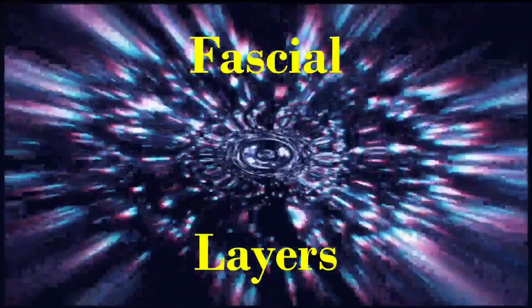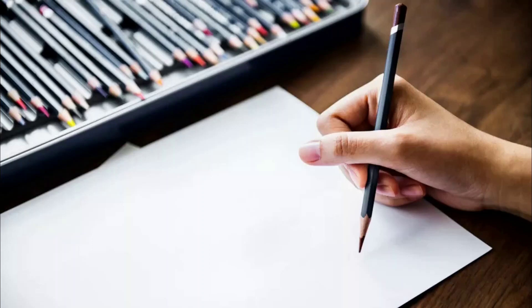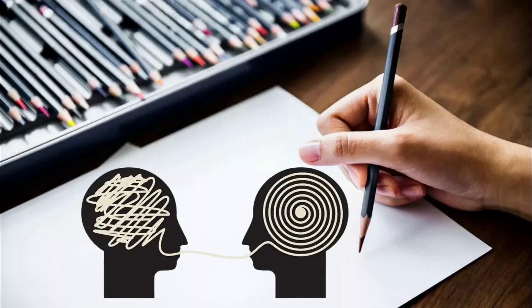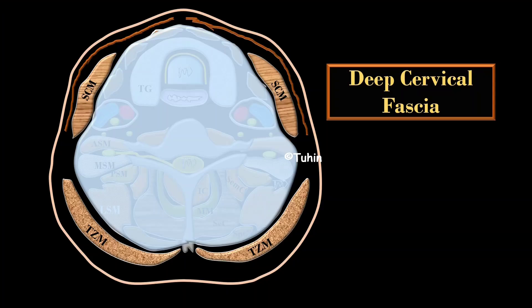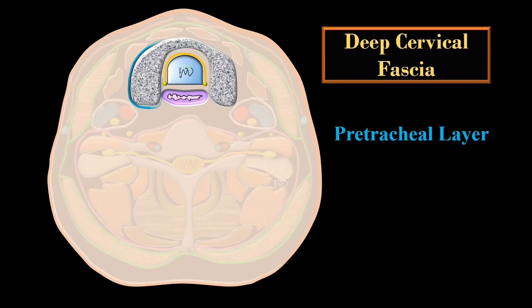When we look at the fascia of the neck, we can divide it into superficial fascia and deep fascia. The deep fascia is more complex and divided into several layers. The first layer is the investing layer, containing the sternocleidomastoid muscle and the trapezius muscle, splitting and encasing or enveloping the muscles on both sides.